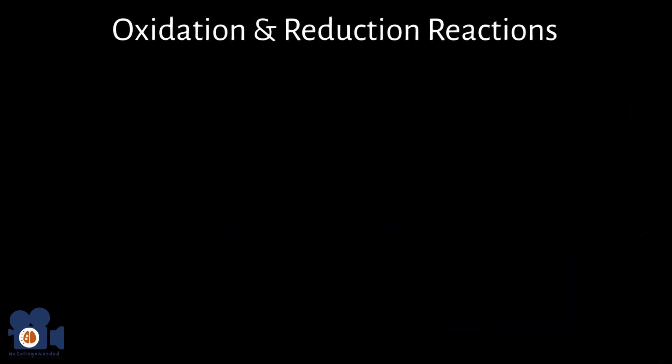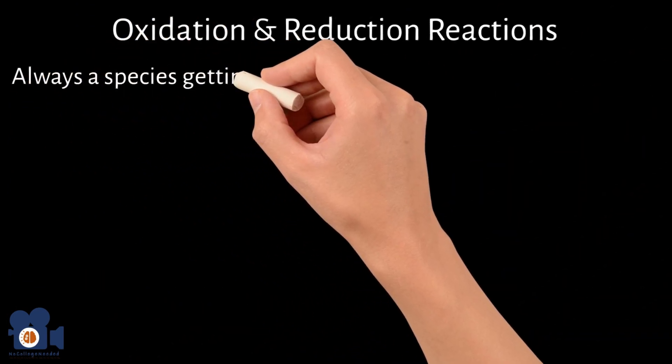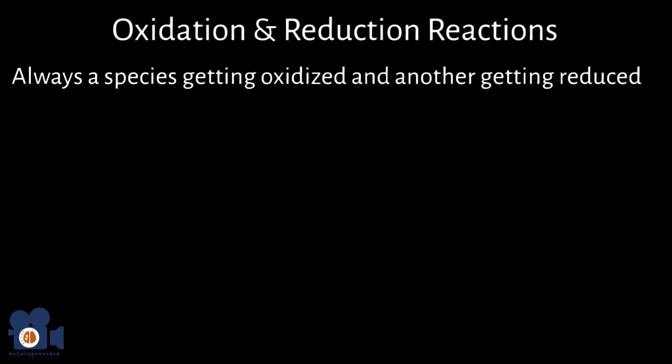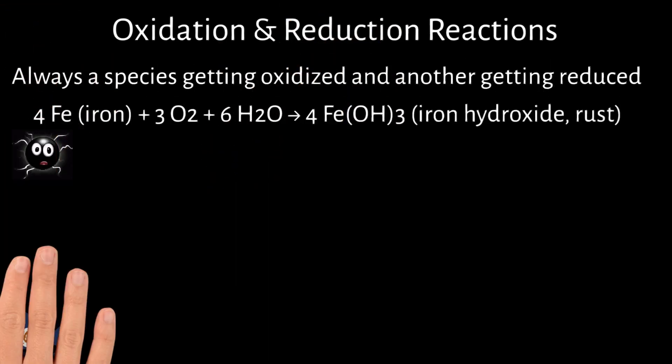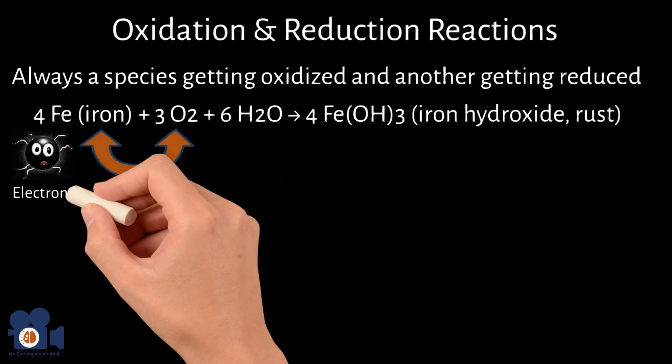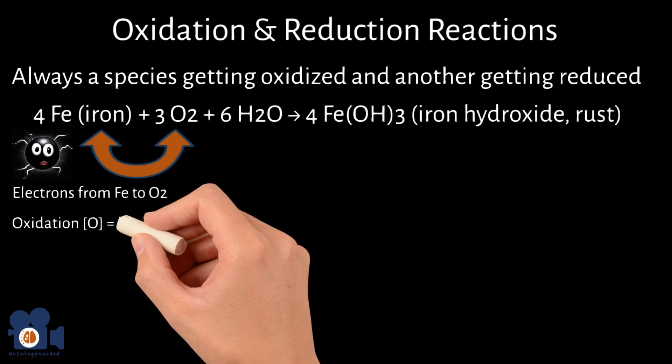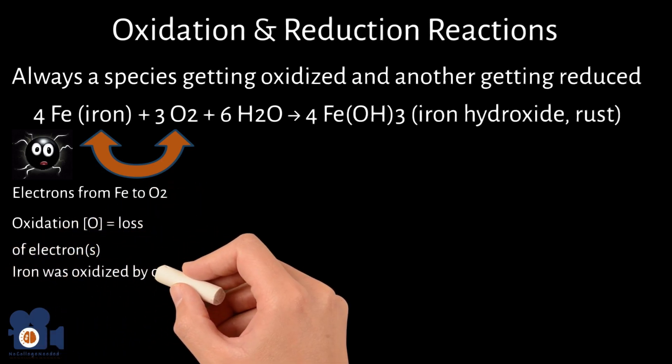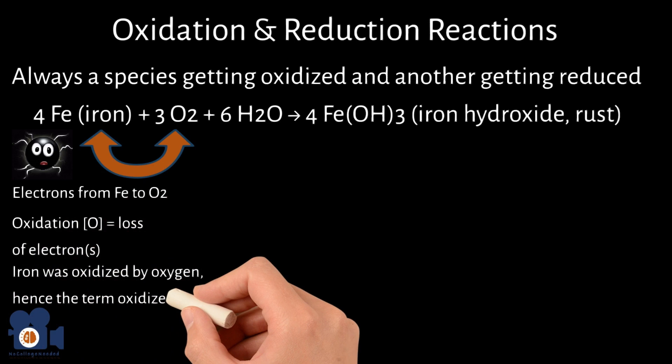In redox reactions, there is always a species getting oxidized and another getting reduced. With rusting, iron loses its electrons to oxygen, and when a substance loses electrons, it is oxidized. Therefore, iron was oxidized by oxygen, hence the term oxidized.